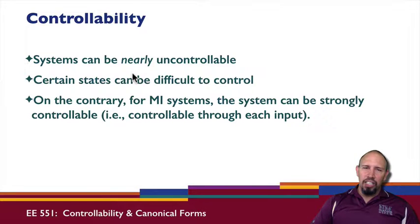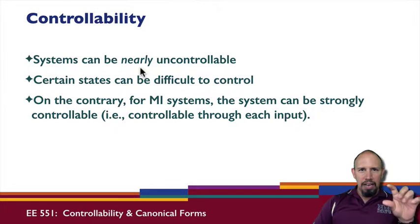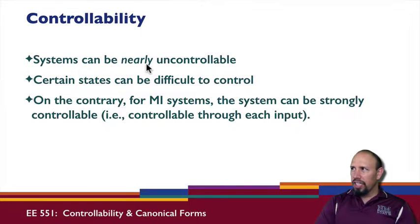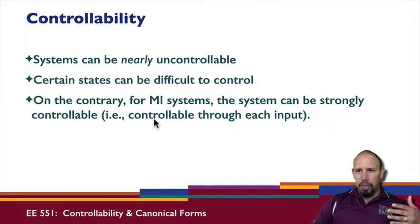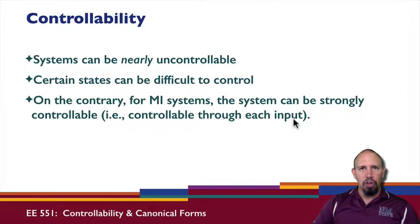We can also talk about systems as being nearly uncontrollable. Remember your QC matrix must have full rank. If you take QC and look at the singular value decomposition, you might have a singular value that's really, really small. It's not zero, but it's really small, in which case the system is said to be nearly uncontrollable, which basically means that certain states can be difficult to control. On the other hand, if you have multiple input systems, then the system can actually be strongly controllable. Each input can be, the system could be controllable through each of the inputs. So it's not only controllable, but it's controllable by multiple paths.